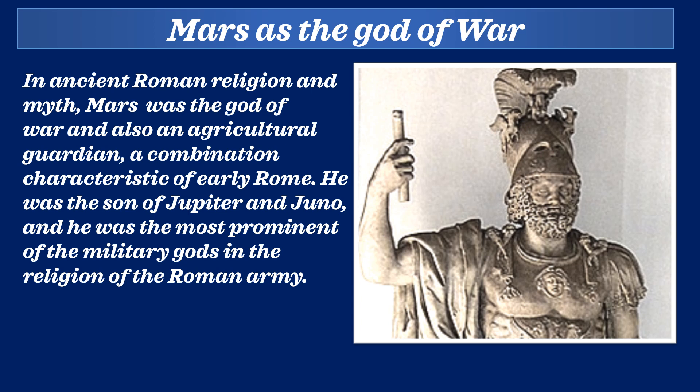In ancient Roman religion and myth, Mars was the god of war and also an agricultural guardian, a combination characteristic of early Rome. He was the son of Jupiter and Juno, and he was the most prominent of the military gods in the religion of the Roman army.